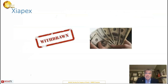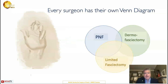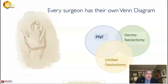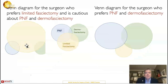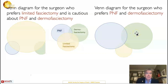We did have the needles — Xiapex was very popular, but it's unfortunately been withdrawn. Every surgeon has their own Venn diagram. In Dupuytren's, you've got needle fasciotomy, dermofasciectomy, and limited fasciectomy, and every surgeon has their own preferred proportion of how they use these treatments. On the left is the Venn diagram for a surgeon who prefers limited fasciectomy, very cautious about needles and skin grafting. My own Venn diagram is on the right — I try to do as many needles as I can because it's cheap, safe, quick, and effective, though it does recur. I also do quite a lot of skin grafting, which when you get used to it is just as easy as limited fasciectomy but much less likely to come back.